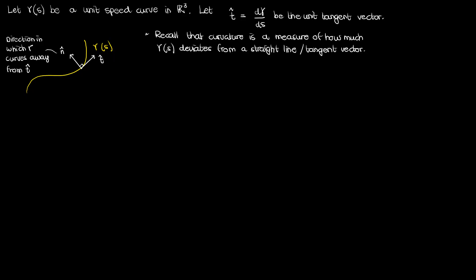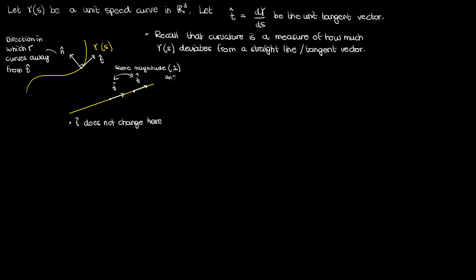Another way to describe curvature is to measure how quickly the unit tangent vector to the curve changes. If I had a straight line, the unit tangent vector would not change as I go down the line. Because it's not changing, the curvature of the straight line is 0, which makes sense — a straight line does not curve. However, for an arbitrary curve like gamma of s, the changing nature of the unit tangent vector can be used to describe the curvature.